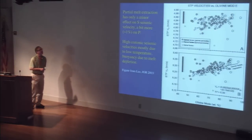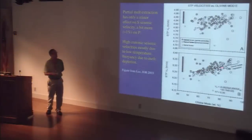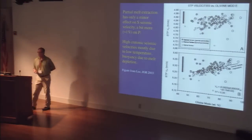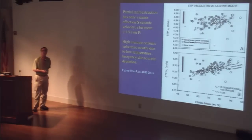So the answer is: high cratonic velocities are due to the low temperature of the cratons, and they get their buoyancy from melt depletion. That's the expectation from seismological results and interpretation. Now let's look at actual samples of cratonic mantle and see how well they match those characteristics.